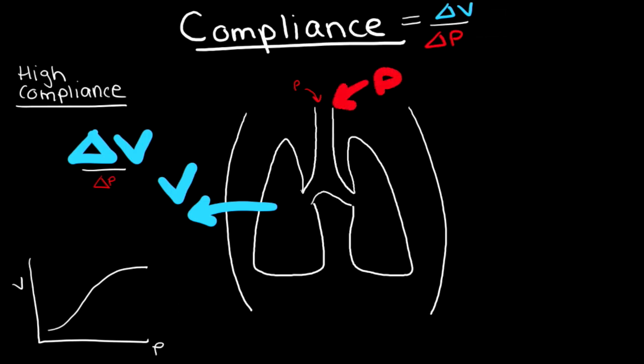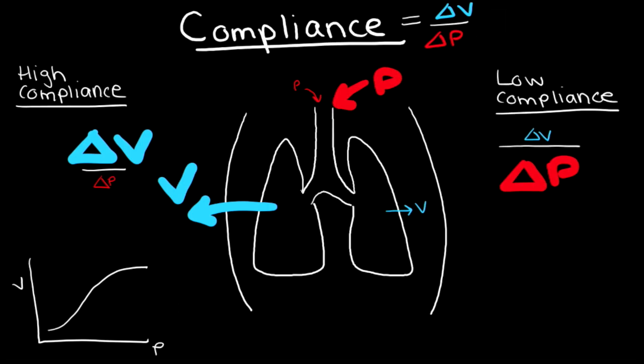Conversely, if a large amount of pressure is given and there's only a small change in volume, then compliance is low and the lungs are stiff. Another way to look at this is on the pressure-volume curve: if you have high compliance, the slope of the curve is larger, and if you have low compliance, the slope of the curve is smaller.